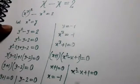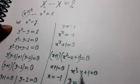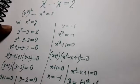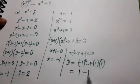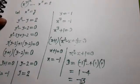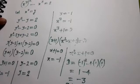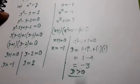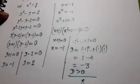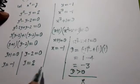For x squared minus x plus 1 equal to 0, it is a quadratic equation. We take the discriminant: b squared minus 4ac equals (minus 1) squared minus 4 times 1 times 1, which is 1 minus 4 equal to minus 3. Since the discriminant is negative, we will not get real roots, so we leave it. Therefore x equal to minus 1 is the result from this case.